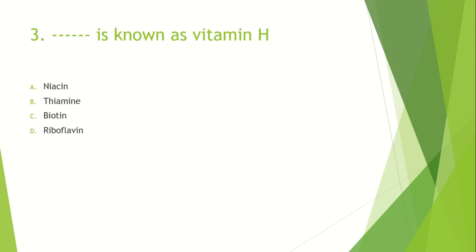Blank is known as Vitamin H. Option A: Niacin. Option B: Thiamine. Option C: Biotin. Option D: Riboflavin. The answer is Biotin, also known as B7. It is written alphabetically — going through B1, B2, and continuing through C, D, E, F, G, H — where H corresponds to Biotin.